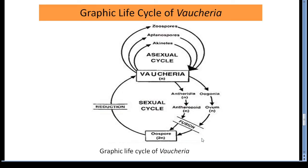Now this is the graphic life cycle of Vaucheria. The life cycle of Vaucheria is haplontic. The vegetative thallus is a haploid gametophyte and produces haploid antherozoids and egg by simple mitotic division. By the union of the antherozoid and egg, a diploid zygote (2n) is formed. The diploid stage is represented by the zygote only. The zygote nucleus undergoes meiotic division to form a haploid gametophyte (n). The gametophyte stage is dominant in the life cycle and the sporophytic stage is restricted to the diploid zygote — this is a haplontic type life cycle.